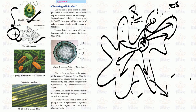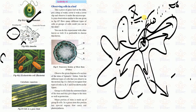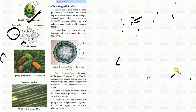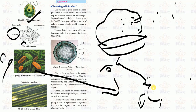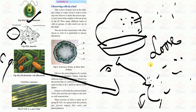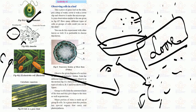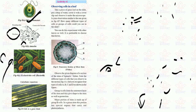Bacteria are very old types of cells. Escherichia coli is a bacterium present in our intestine. When you eat junk food, the good bacteria in your intestine get disturbed. As a result, you may develop problems like diarrhea, also called loose motions.